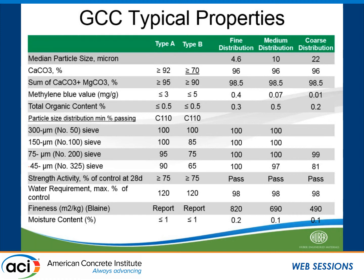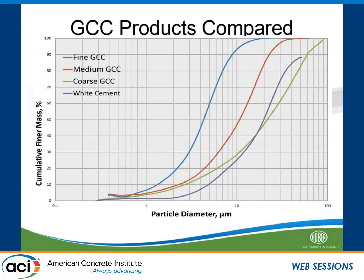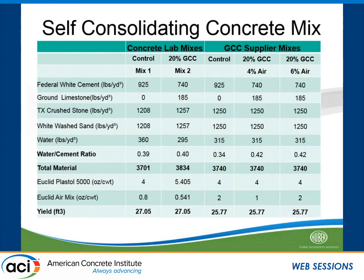Moisture content is easily achieved below the requirement day in and day out in our production. Looking at particle distribution, you can see that only the coarse GCC is actually slightly more coarse than white cement. Fine material gives you the particle packing factor on the fine side of your concrete gradation.